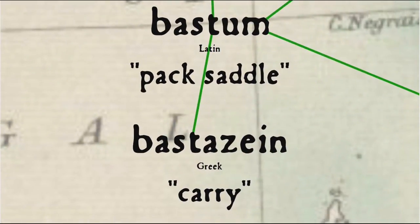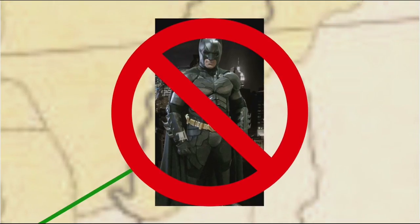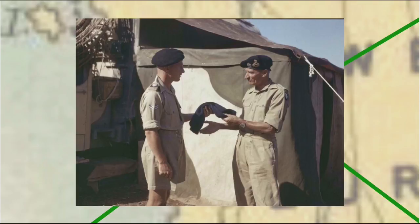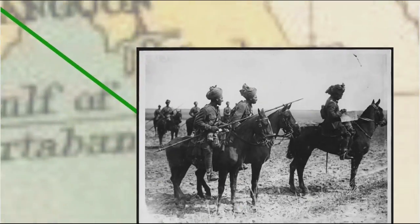That Latin word 'bastum,' by the way, ultimately comes from the Greek word 'bastazein,' meaning to carry, hence its use for pack-saddle. And this root also gives us the word batman — not the superhero Batman, but the term for a military officer's servant. The term was originally applied to a cavalry officer's servant who is in charge of the bat-horse, in other words the pack-horse and its load, before being broadened to refer to any officer's servant. The term batman came to be replaced by the word orderly, but earlier in the British army, as in the days of the British Raj, or British rule in India, batman was the usual term.